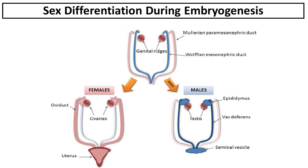During development of the male fetus, the AMH protein is produced and released by cells of the testes. The secreted AMH protein binds to its receptor, which is found on the surface of Müllerian duct cells. The Müllerian duct, found in both male and female fetuses, is the precursor to the female reproductive organs. Binding of the AMH protein to its receptor induces self-destruction of the Müllerian duct cells.